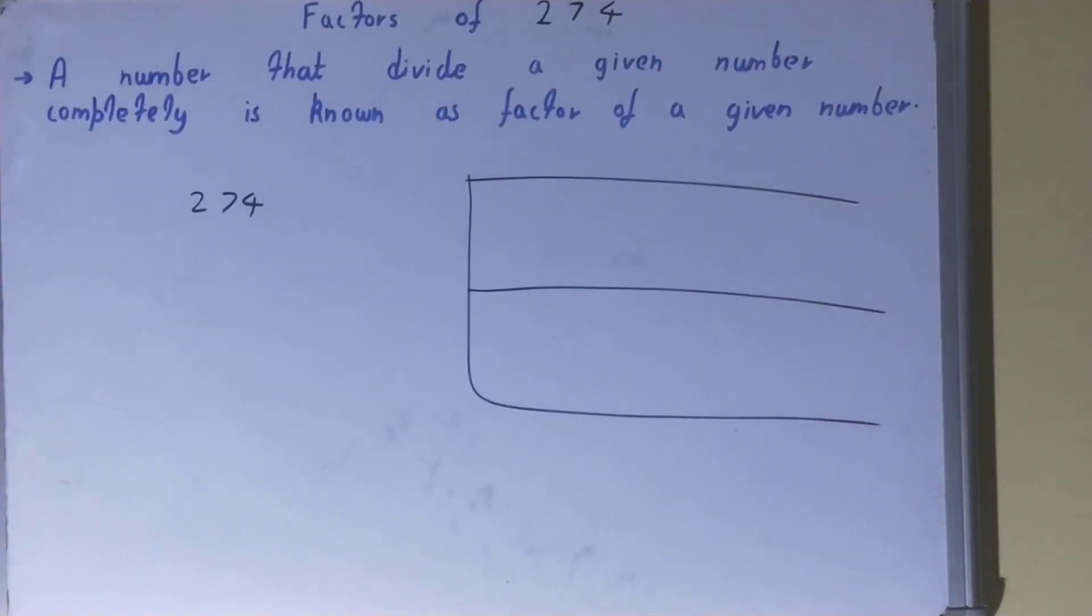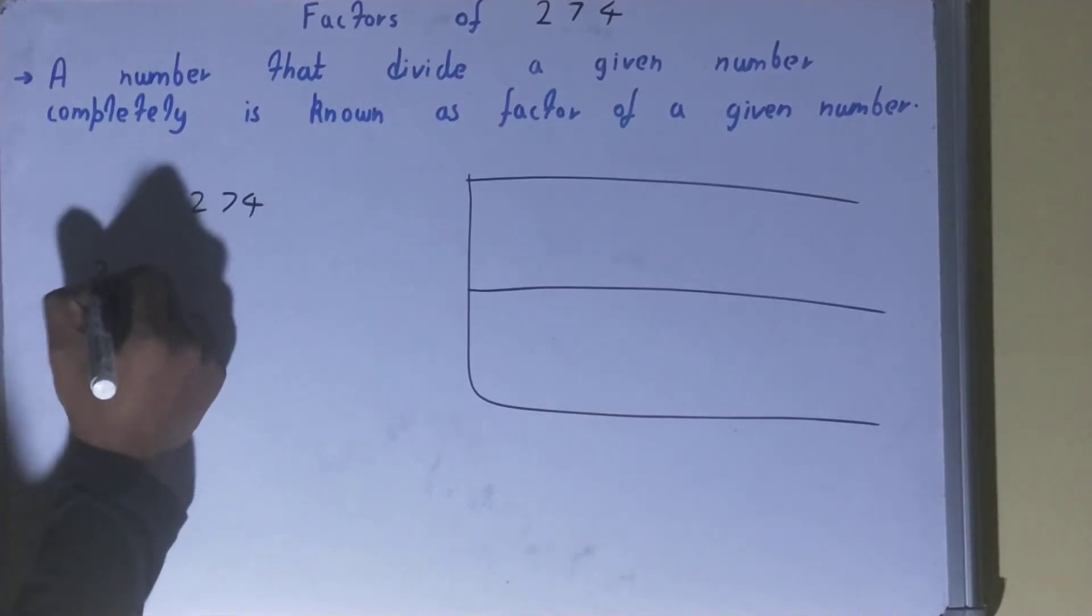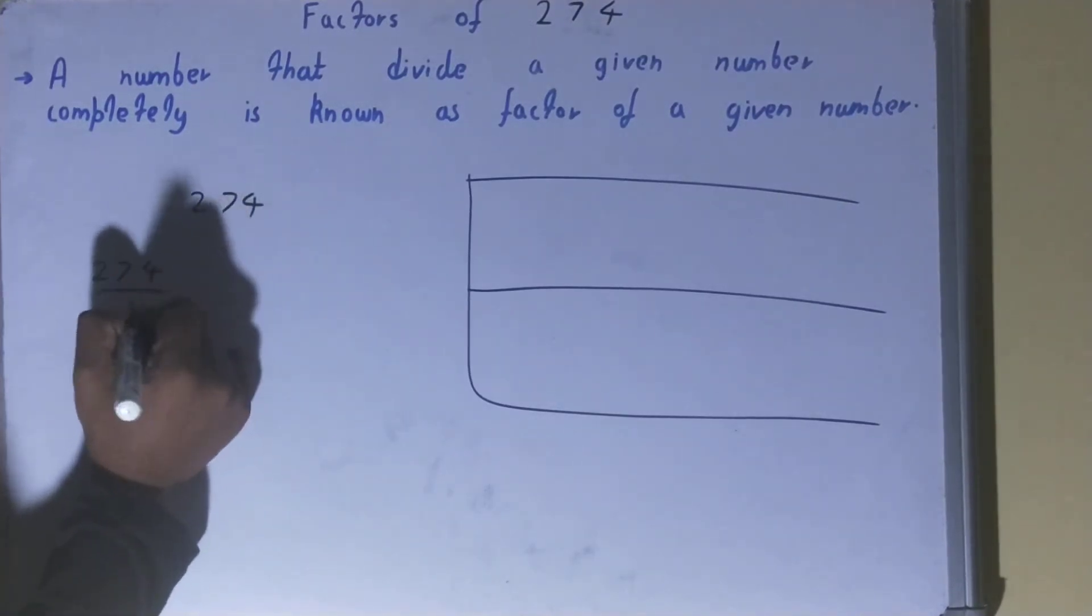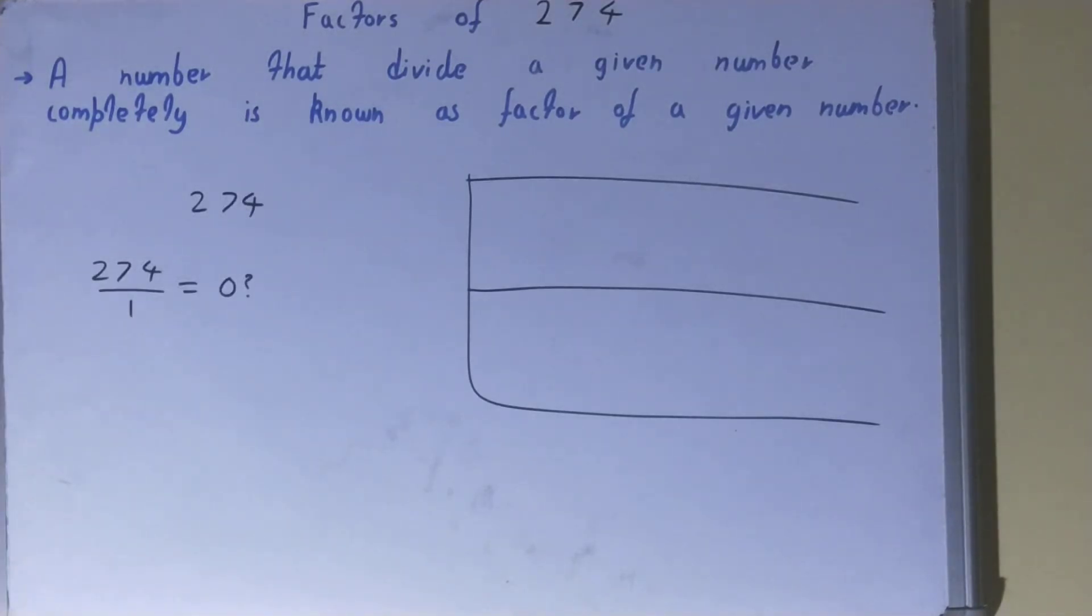Once you are done with that, what you need to do is you need to start with the lowest natural number, that is one. Divide the number 274 by one. If you do so, will you get the remainder as zero? The answer is yes.